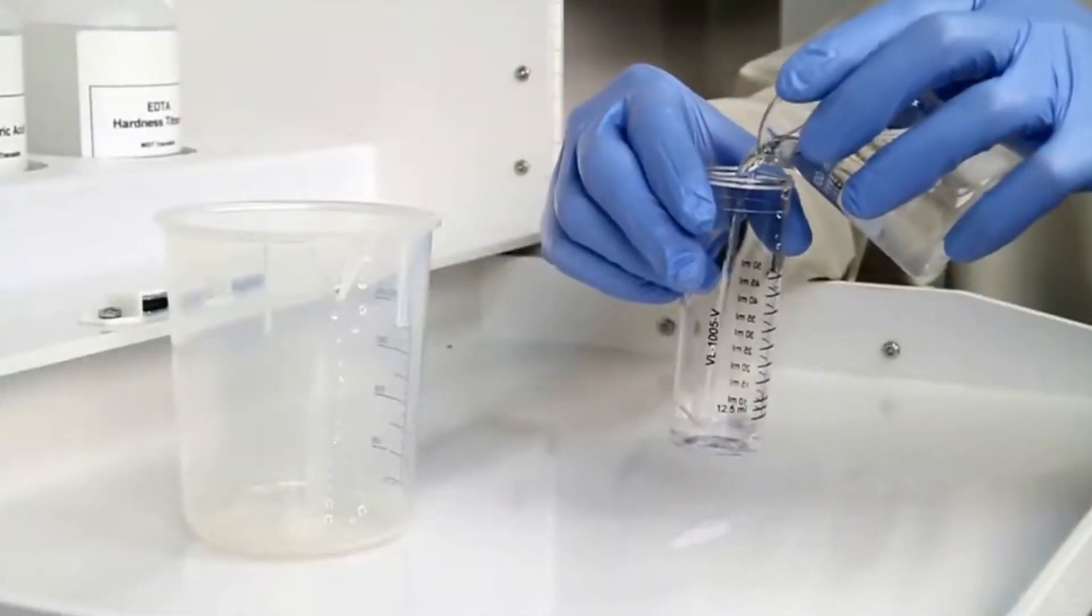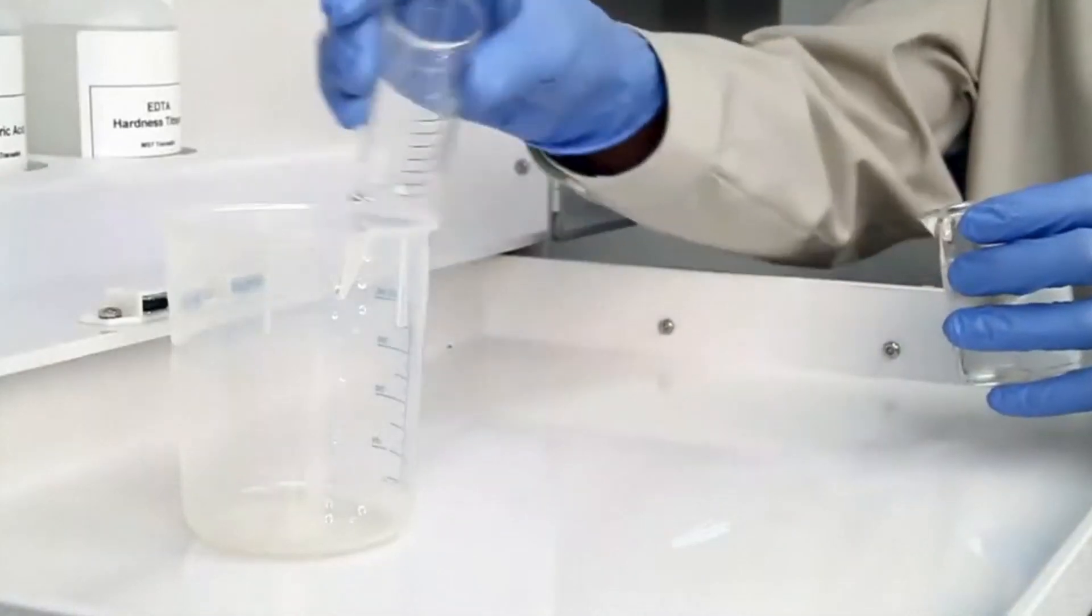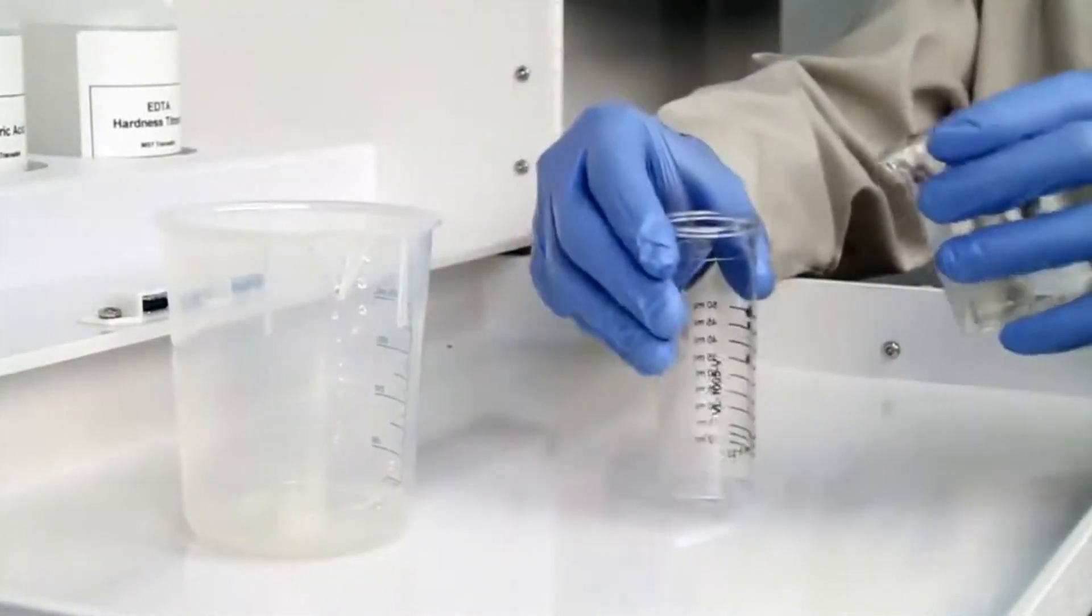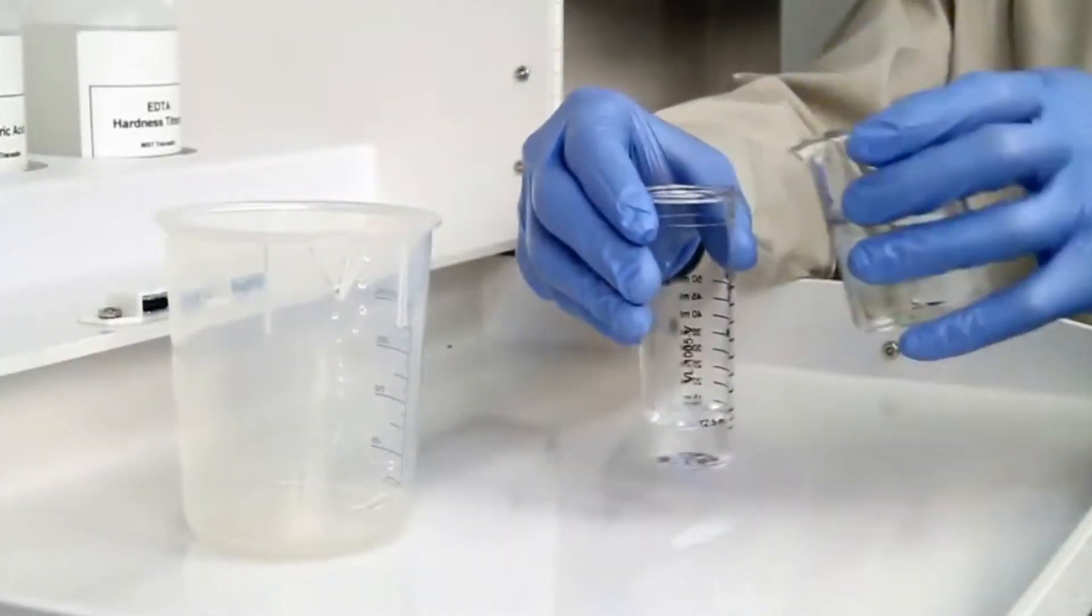The first step according to the EndpointID procedure is to gather an accurate sample. The smallest change in sample size will lead to inaccurate results.